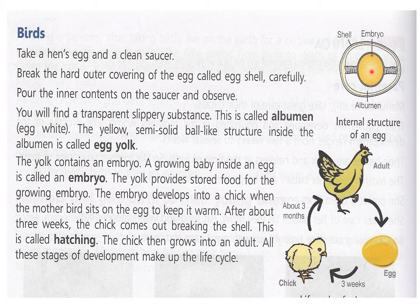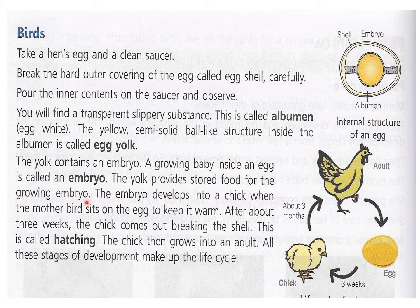The chalaza keeps the yolk balanced in the center so that it may not get hurt, because the baby will develop inside the yolk later on. The yolk contains an embryo. A growing baby inside an egg is called an embryo. The yolk provides stored food for the growing embryo. The embryo grows in almost 21 days in a hen.